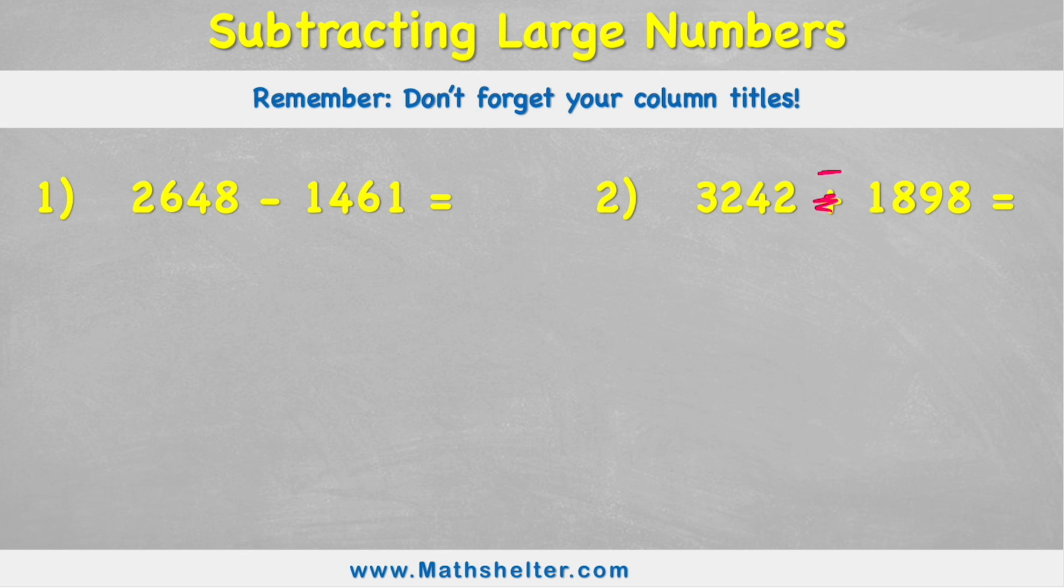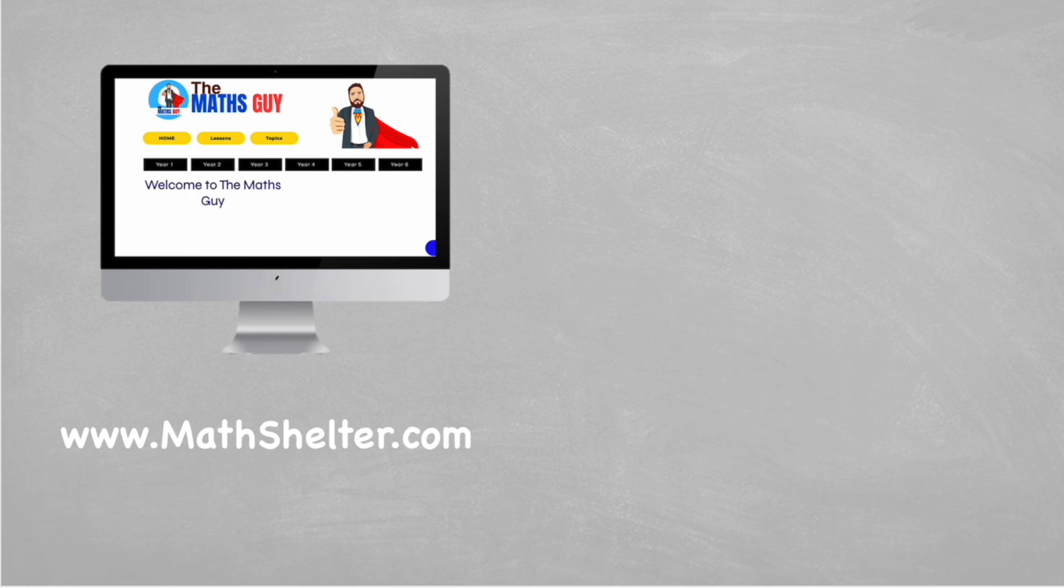So your turn. Here are two questions for you: two thousand six hundred and forty-eight subtract one thousand four hundred and sixty-one, and three thousand two hundred and forty-two subtract one thousand eight hundred and ninety-eight. Take your time, have a go at working these questions out. Press pause on the video and then put your answers in the comments section. I'm going to make sure I mark them all. Press pause, good luck! And there you go guys, that is how to subtract large numbers. Hopefully this video has been helpful for you. If it has, head on over to mathshelter.com where you're going to find loads more videos like this, all in sequence, so you'll know exactly what to do next. But for now guys, I'll see you in another video. Peace out!